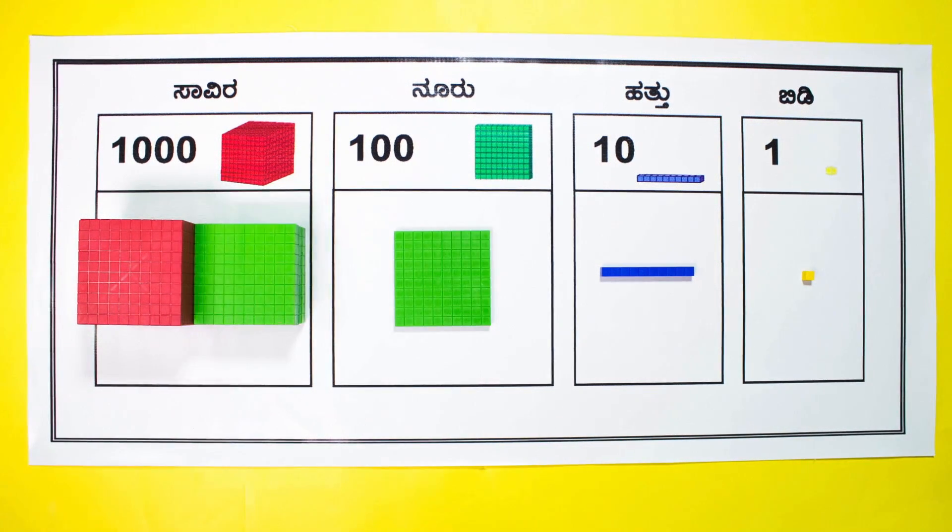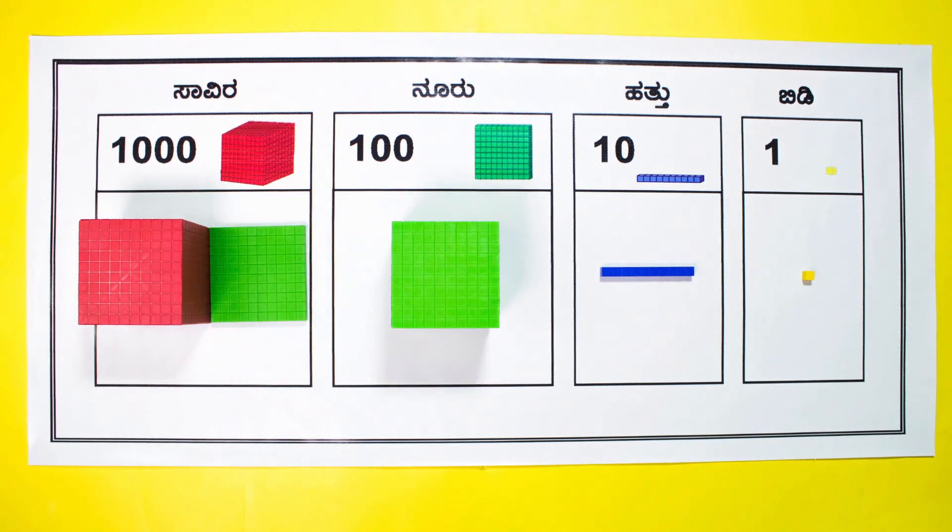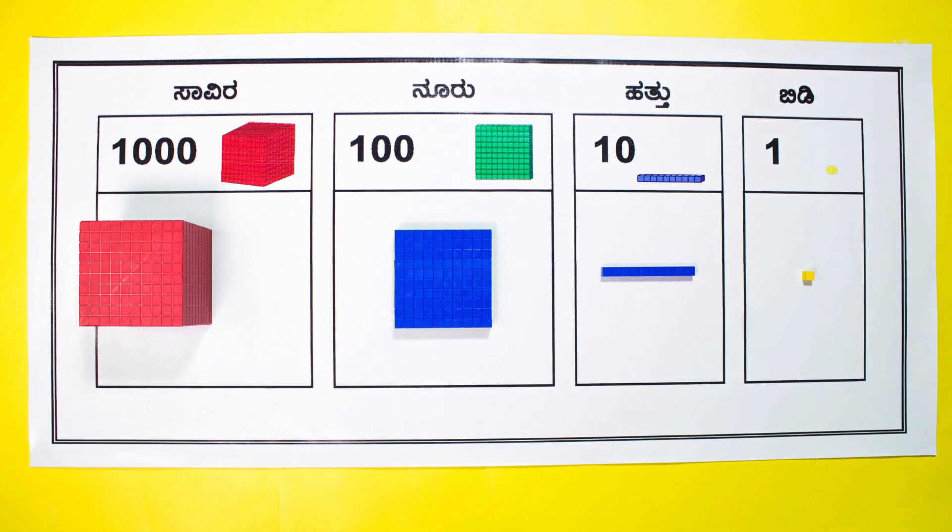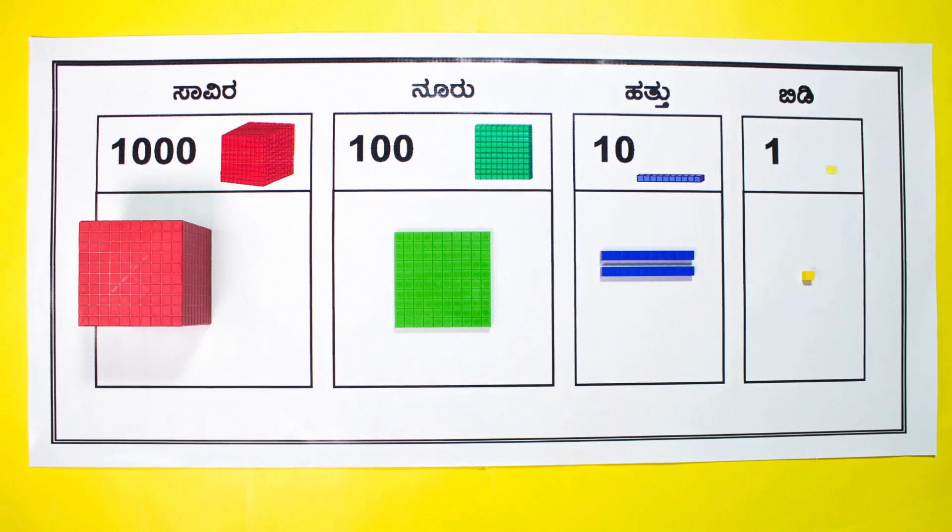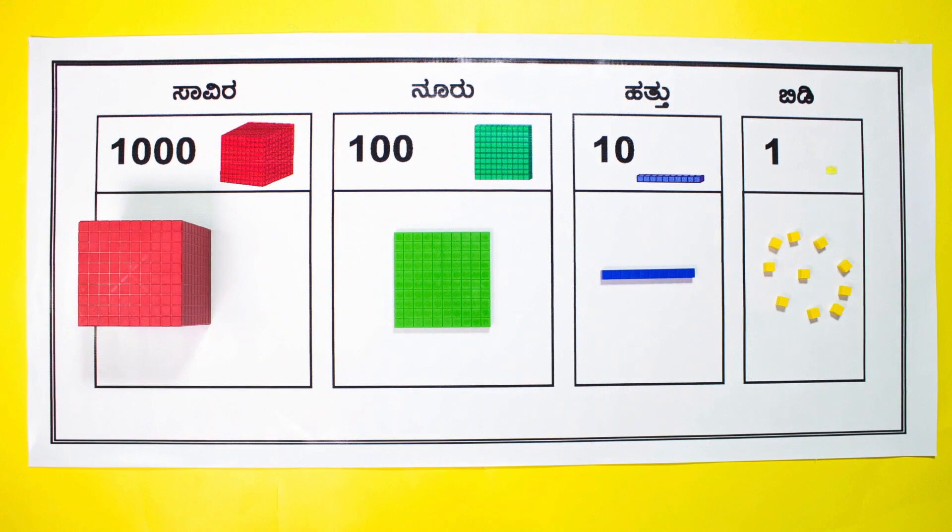Similarly, by moving one place left, replace 10 blue rods with one plate of hundred. 10 hundreds will then be replaced by 1000 and so on. Here's how the reverse process works. 1000 can be regrouped as 10 hundreds. 100 can be regrouped as 10 tens, and similarly 1 ten can be regrouped as 10 ones or units.